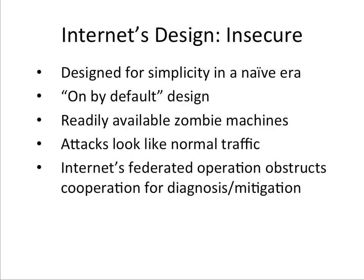Unfortunately, the internet's design is inherently insecure. This partly has to do with history — the internet was designed to exchange messages and enable communication between research centers and universities, so security was not the most important concern. Being able to communicate was the priority. One of the big challenges in detecting attacks is that malicious traffic can look very similar to normal traffic — just a little bit more, which could also be explained by more users.